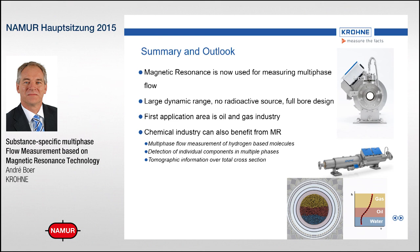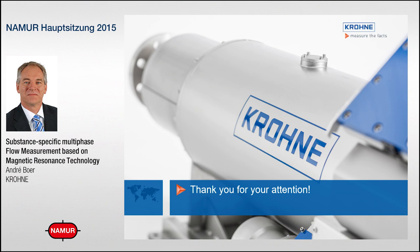There are a lot of possibilities by looking at the imaging features of magnetic resonance. Currently we do one-dimensional slicing, but in the future you can also think about two-dimensional pixel-type information over the cross-section, which can give very nice information about distribution and processes taking place in the cross-section of a pipe. With this, I'd like to thank you for your attention and conclude the presentation on multiphase MR flow measurement. Thank you.